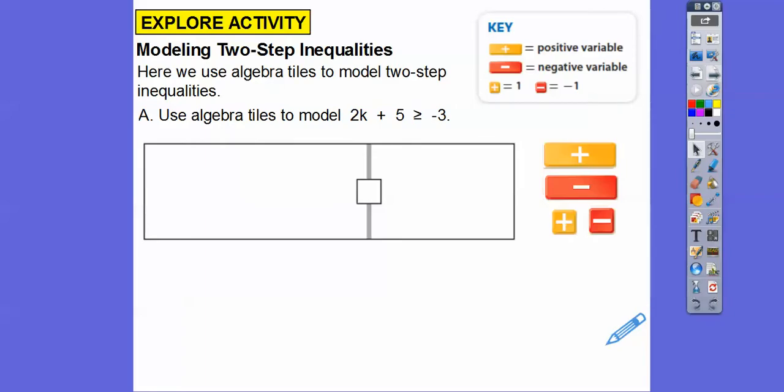So here we're going to use algebra tiles to model a two-step inequality. Let's use algebra tiles to model 2k plus 5 greater than or equal to negative 3. So these are our positive variables. Since there's 2ks, we'll do two of these. Plus 5, we're going to be doing two of these guys right here. And greater than or equal to, we're going to put that right inside of here. So it's no longer equals bar. It's going to be greater than or equal to. And then here, we're going to plug in negative of those guys right there.